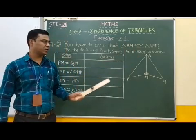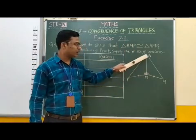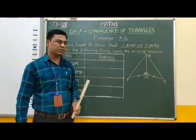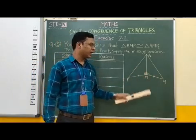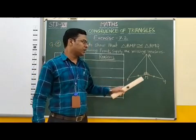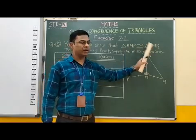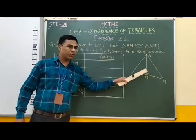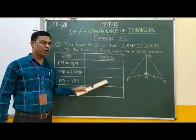For this question, there is a figure given. In this figure, there are two triangles — triangle AMP and triangle AMQ. If you observe, between these two triangles, two sides are equal and two angles are also equal. We have to show that these two triangles are congruent, that is triangle AMP is congruent to triangle AMQ. Steps are also given, and we have to write reasons for those given steps.